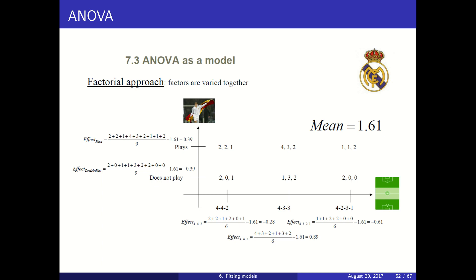ANOVA assigns the contribution of each factor. This player, playing or not, contributes 0.39 when he plays and minus 0.39 when he doesn't. The contribution of 4-4-2 is negative, 4-3-3 is positive, and 4-2-3-1 is negative. So it seems the best combination is the 4-3-3 field position with this player playing.